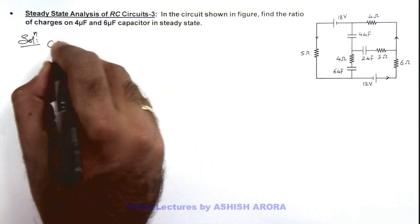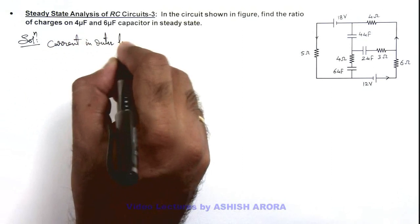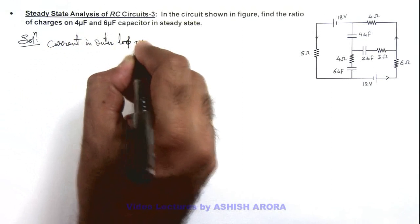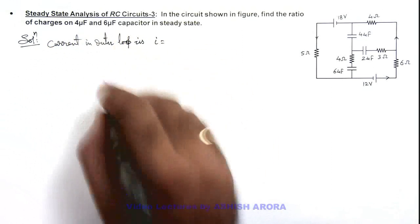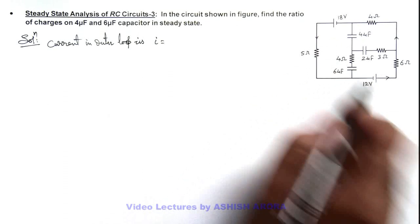We can write current in outer loop. Here this current can be given as total batteries. Here are of EMF 30 volts as both are supporting each other.